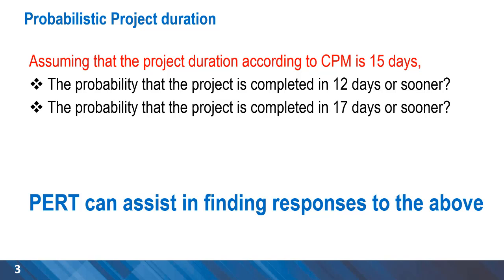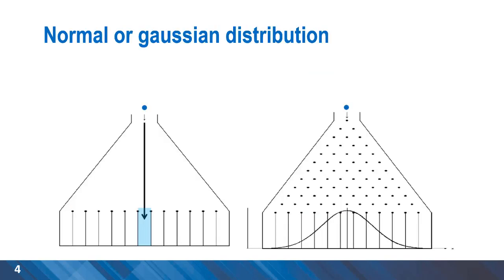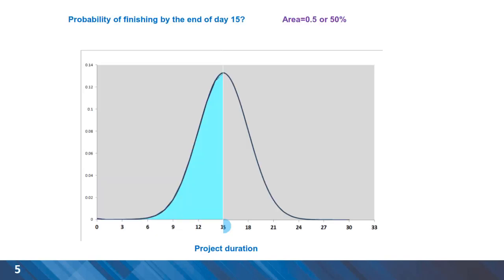For this type of problem, Program Evaluation and Review Technique will be very useful. PERT uses a normal or Gaussian distribution to give us the probability for any event. For example, if 15 days has been calculated as the completion time using CPM, a normal distribution can represent other completion times, and the area under the curve gives us a probability.